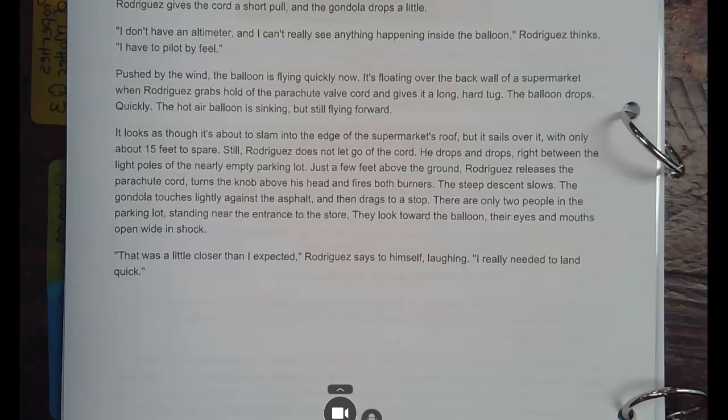Pushed by the wind, the balloon is flying quicker now. It is floating over the back wall of a supermarket. When Rodriguez grabs hold of the parachute valve cord and gives it a long, hard tug, the balloon drops. Quickly, the hot air balloon is sinking, but still flying forward. It looks as though it's about to slam into the edge of the supermarket's roof, but it sails over it with only about 15 feet to spare. Still, Rodriguez does not let go of the cord. He drops and drops right between light poles of the nearly empty parking lot. Just a few feet above the ground, Rodriguez releases the parachute cord, turns the knob above his head, and fires both burners. The steep descent slows. The gondola touches lightly against the asphalt and then drags to a stop. So he doesn't want to land like that, right? He wants to land like that. So what happens is, instead of keeping it going down really fast, when it gets about here, he fires up the burners. So it'll just kind of do this, okay?